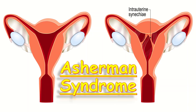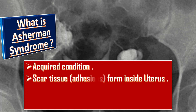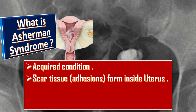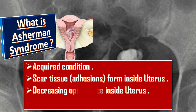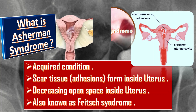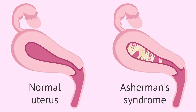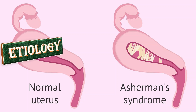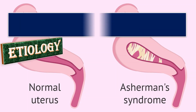Today we will talk about Asherman syndrome. What is Asherman syndrome? It is an acquired condition where scar tissue or adhesions form inside the uterus. The scar tissue can build up, decreasing the amount of open space inside the uterus. Asherman syndrome is also known as Fritz syndrome.